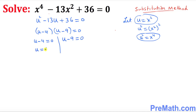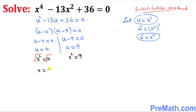So u becomes positive 4 and u becomes positive 9. Since we started with u equal to x squared, I'm now going to plug back in for x. So this gives x squared equals 4, and on this side x squared equals 9. We solve for x by taking the square root on both sides. The square and square root undo each other, so x equals positive or negative 2, and x equals positive or negative 3.